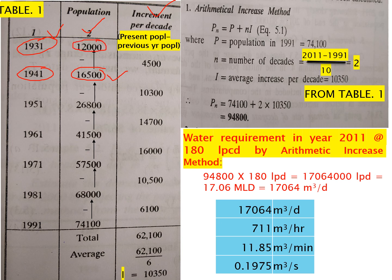Jo present population hai usmein se humko previous year ka population minus karna hoga. So 16,500 minus 12,000 gives 4,500. Similarly, 1951 ka population as compared to 1941 — 26,800 minus 16,500 gives 10,300. And so on, you can calculate for each and every decade up to 1991.